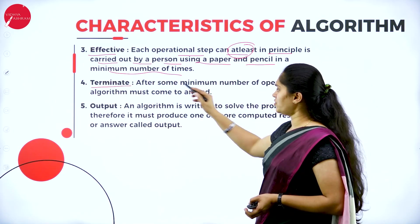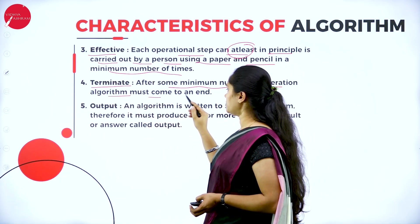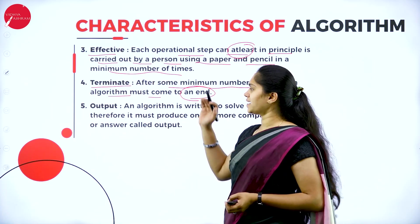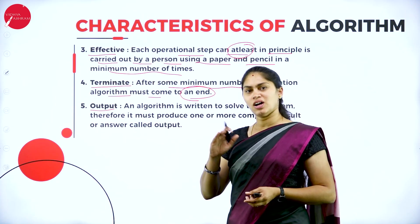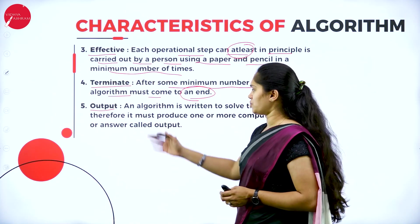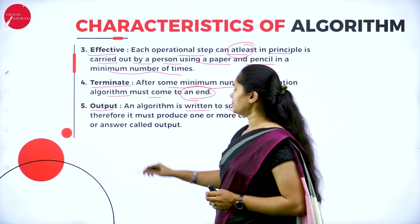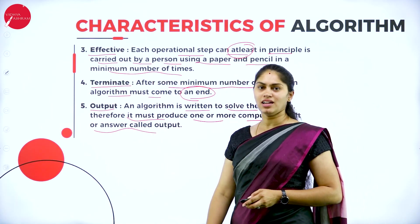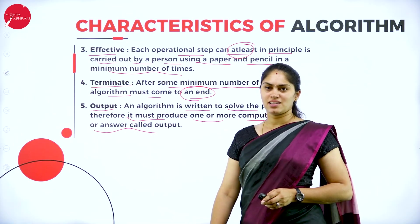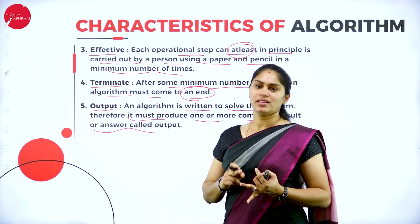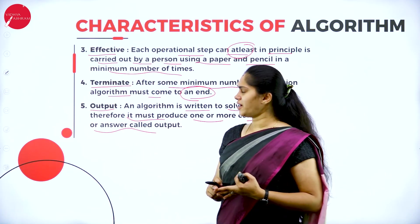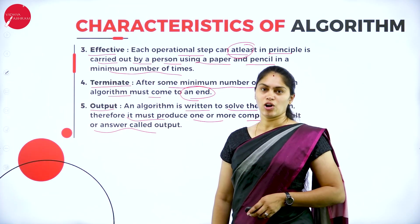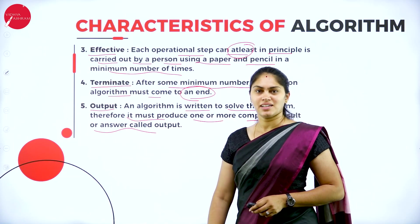The fourth characteristic is Terminate — after a certain minimum number of operations, the algorithm must come to an end. It should not be infinite; at a certain stage, the algorithm should end by giving a result. The fifth characteristic is Output — after taking input and processing, it must produce output. An algorithm is written to solve a problem, so it must produce one or more computed results. These five characteristics — input, definite, effective, terminate, and output — define an algorithm.